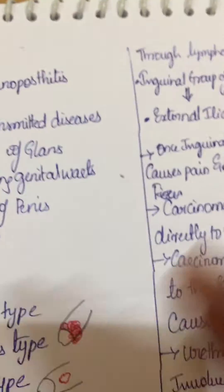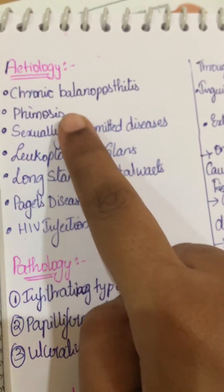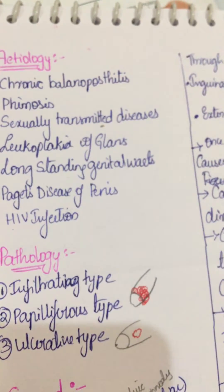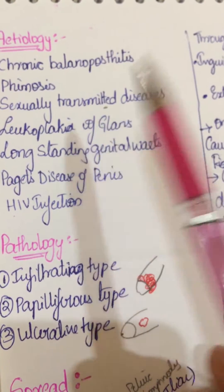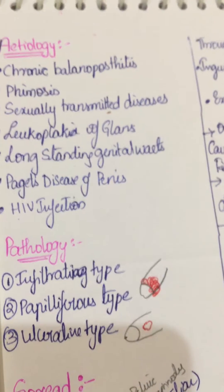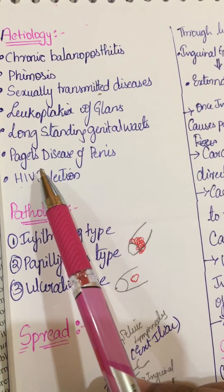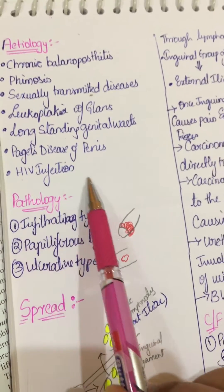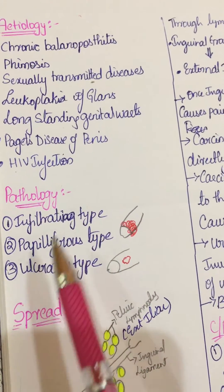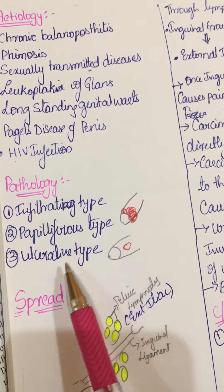Carcinoma penis - etiology: it is due to chronic balanoprosthitis, phimosis, sexually transmitted diseases, leukoplakia of the glans, long-standing genital warts, Paget's disease of the penis, and HIV infection.